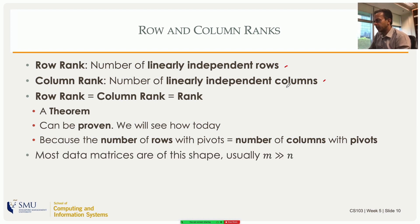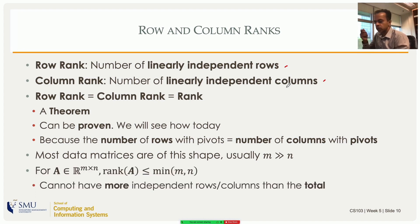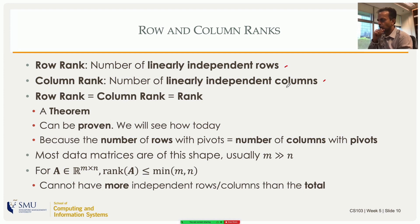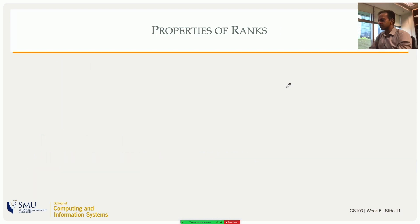One thing to keep in mind for computer science and data science: our data matrices tend to be tall, meaning more rows than columns, because you have measurements along a few features or variables with more and more measurements coming in. For such tall matrices, the columns tend to be linearly independent because they are real measurements — there's no reason for linear dependency. The rank cannot exceed the total number of rows or columns.